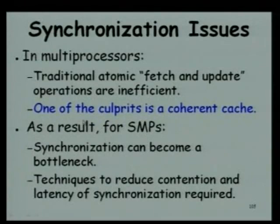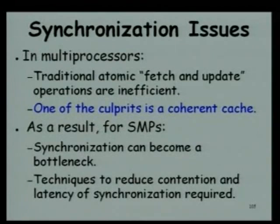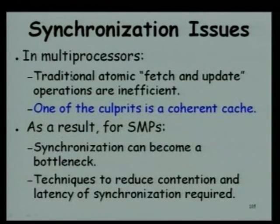As one processor fetches and updates, other processors might also generate fetch-and-update. Each time it is executed by one processor, it will be invalidated in other caches, causing too much memory traffic. Also, fetch-and-update will cause other processors to stall until it completes. Traditional atomic fetch-and-update operations are inefficient in an SMP — they become a bottleneck and reduce SMP efficiency. None of the commercial SMPs use this kind of operation.